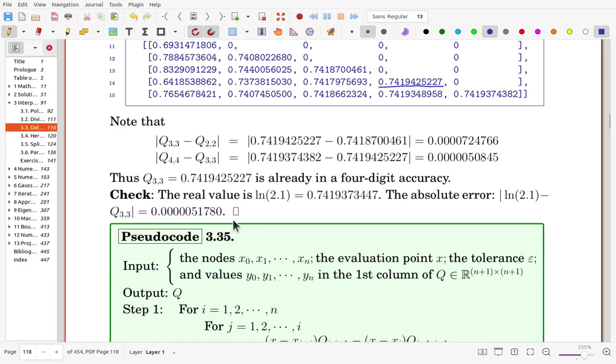Q33 is already in four-digit accuracy. We can check that. The real value is this one, so that absolute error is this one. So that Q33 is a really accurate approximation.